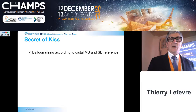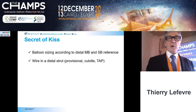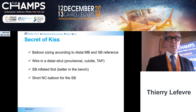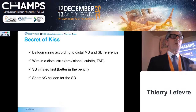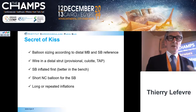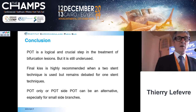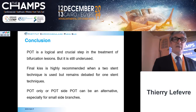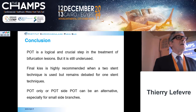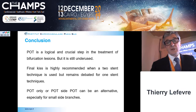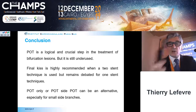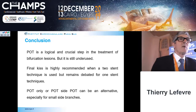To summarize: balloon sizing according to distal and side branch reference, going through a distal strut, inflating the side branch first then kissing balloon inflation, using a short non-compliant balloon for the side branch, performing long or repeated inflation, and simultaneous deflation. POT is a logical and crucial step in the treatment of bifurcation lesions and should be used nearly always. Final kissing is highly recommended with the two-stent technique but remains debated for one-stent techniques. POT only or POT-side-POT can be an alternative, especially with a small side branch.